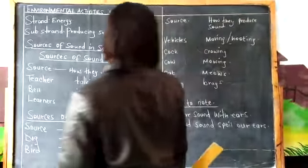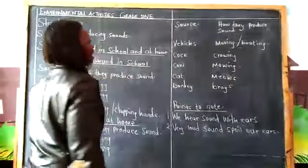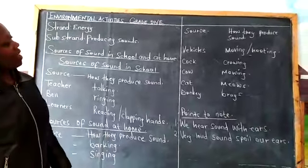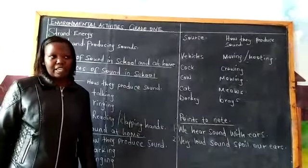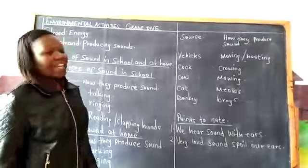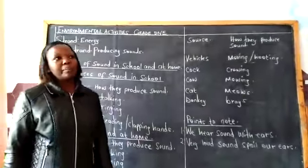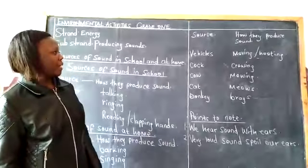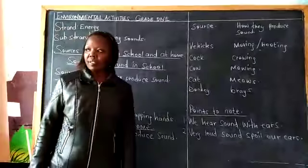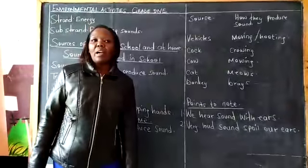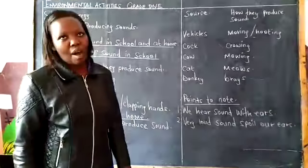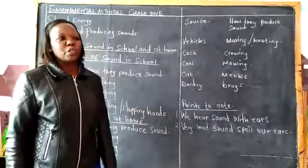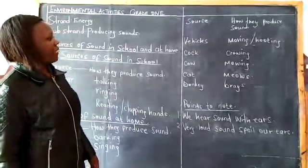We have other sources outside at our homes. We have animals, and we have cars. When the cars are moving, they produce sound. Even when they are hooting — pi, pi, pi — they produce sound. Even at home we have cocks; when they are crowing, they produce sound: hu, hu, hu — that is sound produced by the cocks.